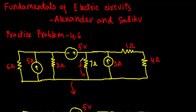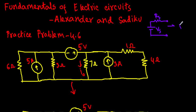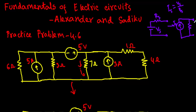For this circuit we have to use the source transformation theorem to calculate the current through this 7 ohm resistor. The theorem states that if we have a voltage source with a resistance in series — let's say the series resistance is Rs and the voltage is Vs — I can convert that voltage source and series resistance to an equivalent current source and resistance in parallel.